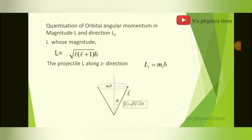Spatial quantization is the quantization of orbital angular momentum in magnitude and direction, represented as L. For magnitude: L is equal to root of l(l+1) times h-cross. For direction: L is equal to ml times h-cross. This picture represents the magnitude and direction of L.